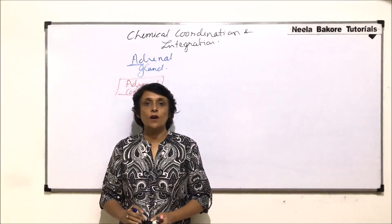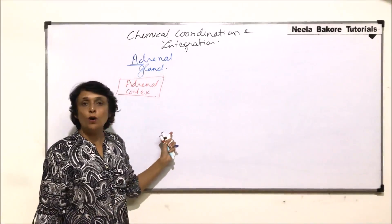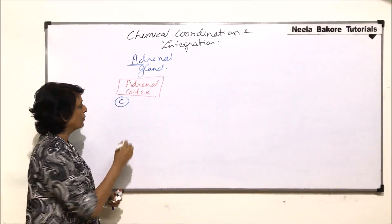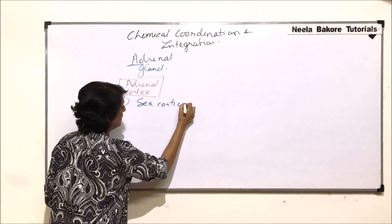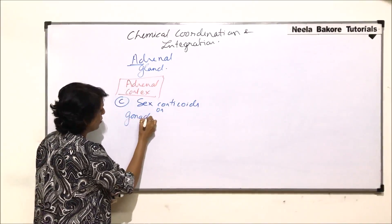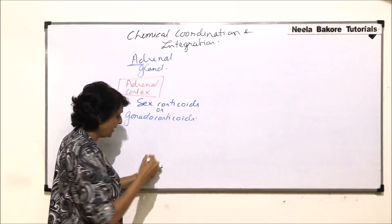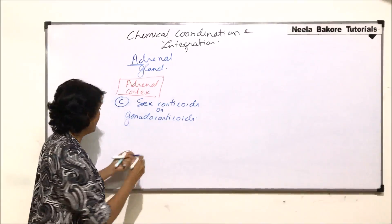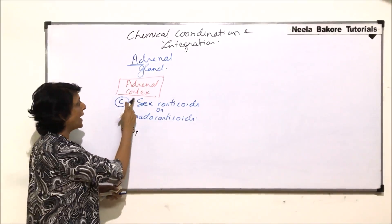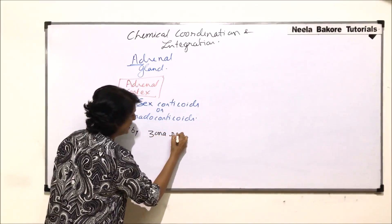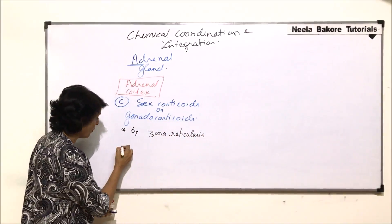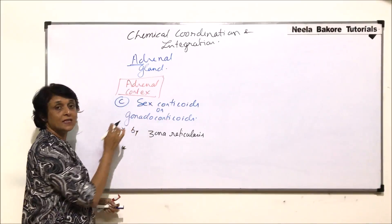In this video we will talk about the third category of hormones secreted by the adrenal cortex. These hormones are called sex corticoids, or sometimes gonadocorticoids. The hormones in this category are secreted by the third and innermost zone of the adrenal cortex, that is the zona reticularis.